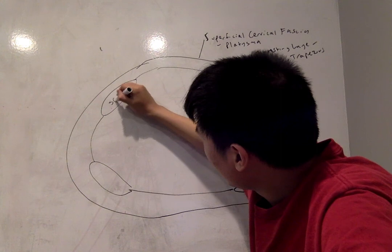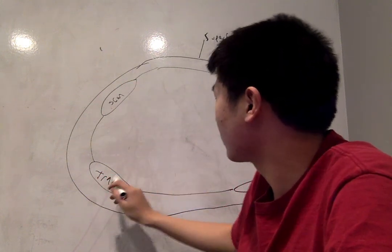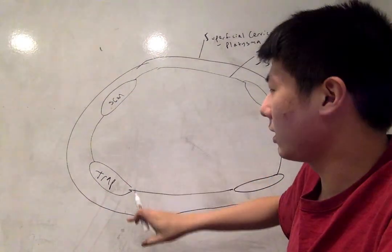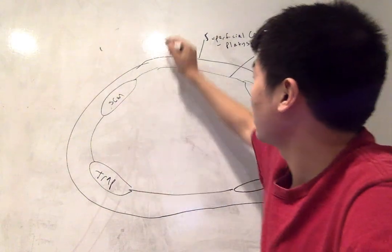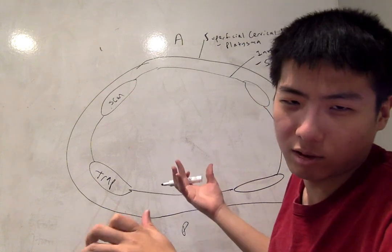And notably here you have the sternocleidomastoid and the trapezius. Your SCM is right here and your trapezius is right here. Your SCM is anterior and your trapezius is posterior.